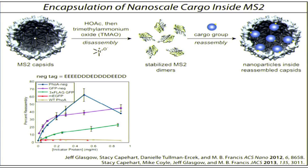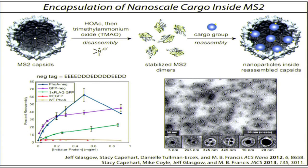We can also do this with many inorganic particles that have strong negative charge. Here I'm showing these pictures — they look a little bit like frog eggs. The larger circles are the viral capsids and the black spots in the middle are actually gold nanoparticles. We use gold nanoparticles with a high negative charge outside, and this triggers the assembly of the capsid structures, with these particles trapped inside the protein shell. We can do different sizes and different multiplicities.